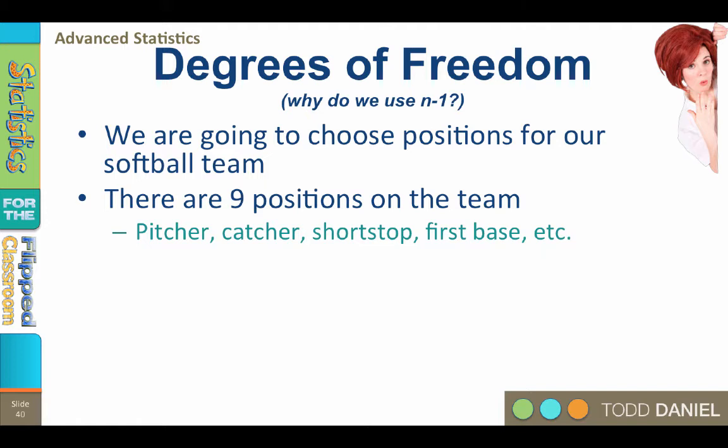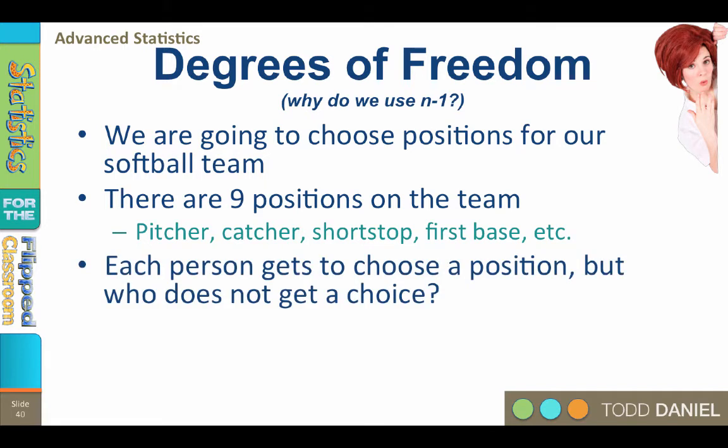The first person picks a position to play on the team. The second person chooses from among the remaining eight positions. The third person chooses from among the seven remaining positions, and so on. Each person gets to choose a position. But who does not get a choice? When we get to the eighth person, that person chooses between two remaining positions. But the last person is stuck with whatever position remains, so that person doesn't actually get to make a choice.